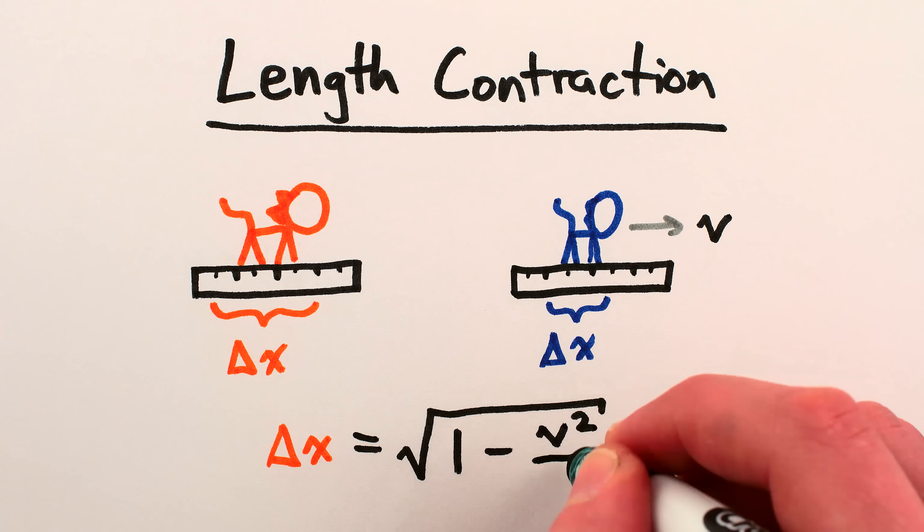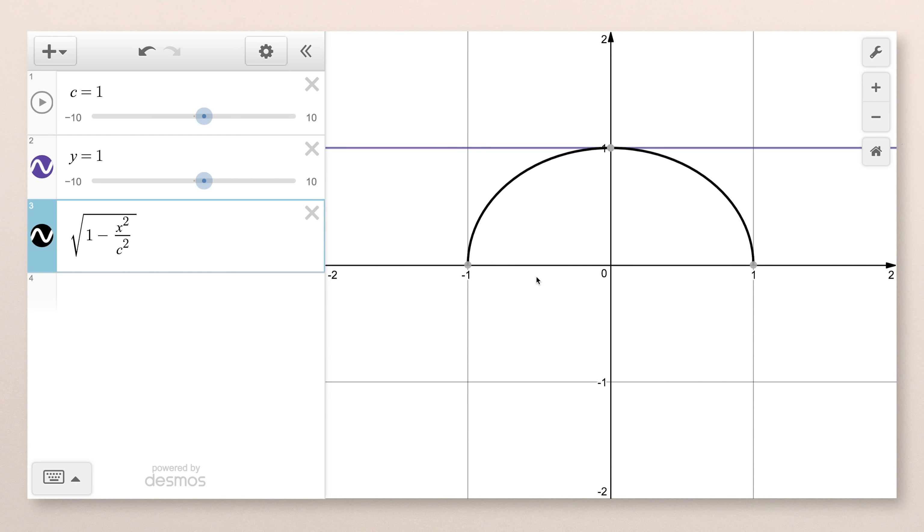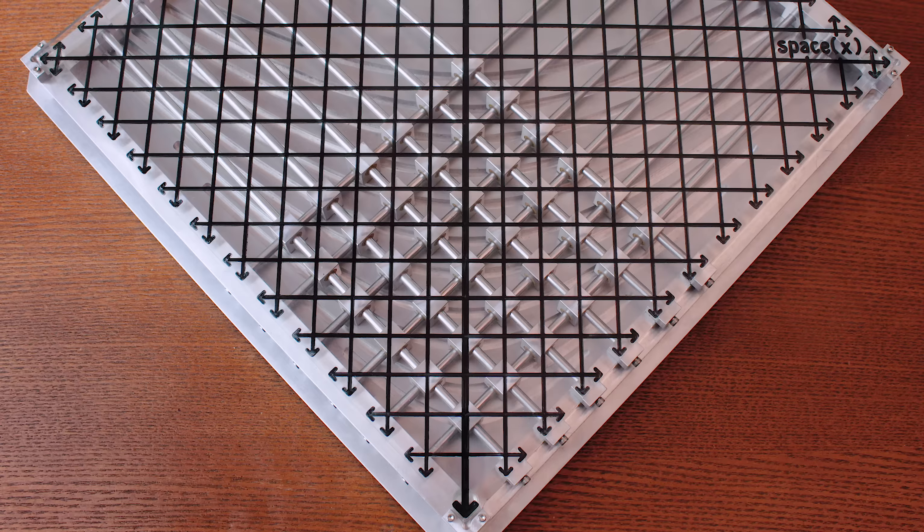The precise factor by which lengths are contracted again depends on how fast we're moving relative to each other, and looks like this. And similar to the case of time dilation, the closer you are to light speed, the more relative perception of lengths becomes distorted. So let's recap.